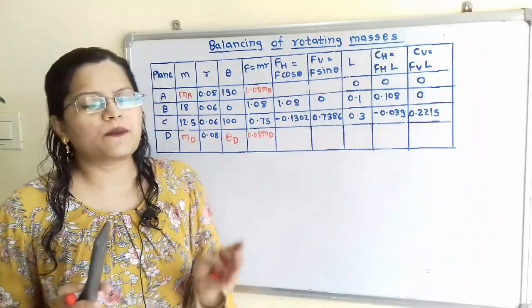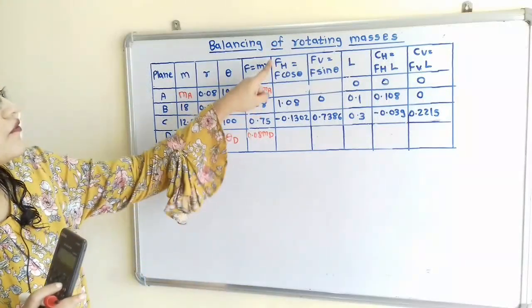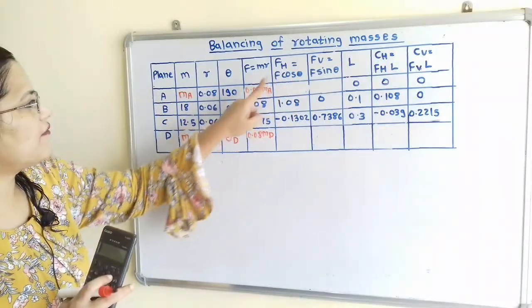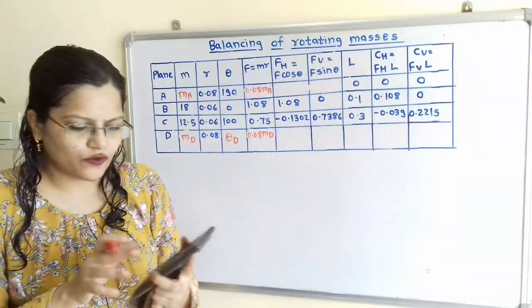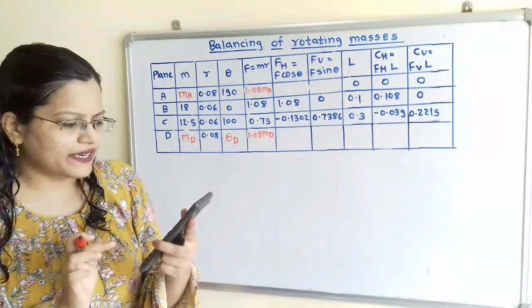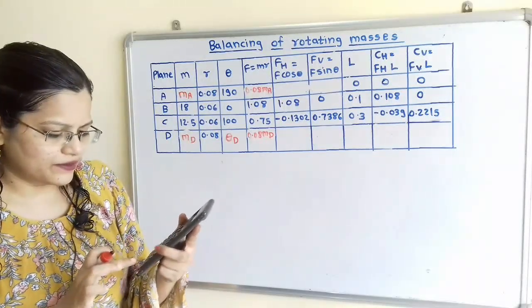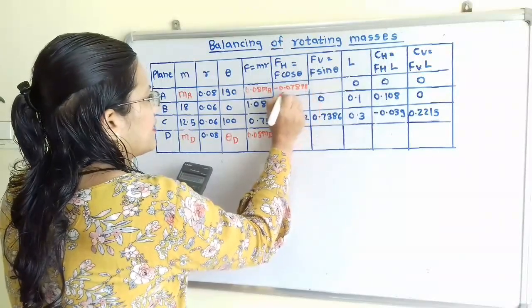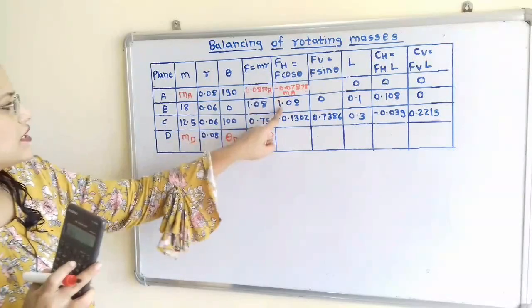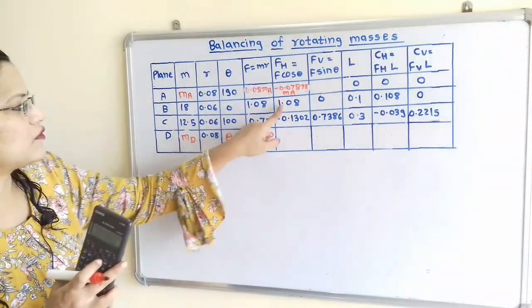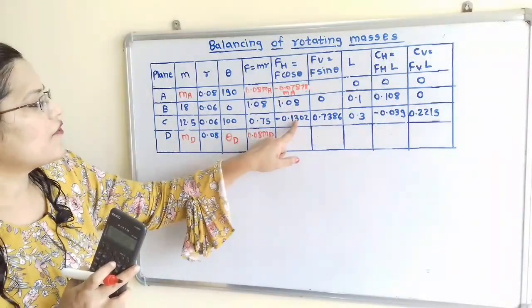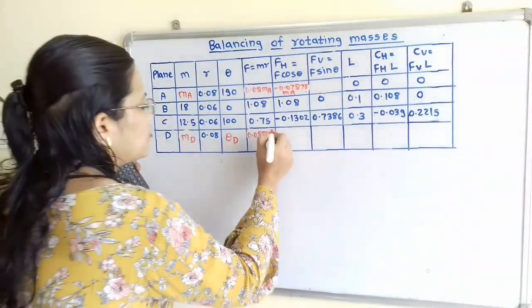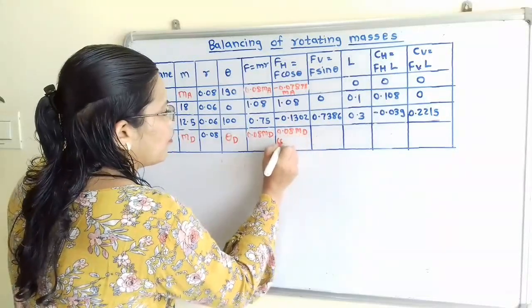We find the horizontal component F·cosθ for each plane. For A: 0.08·MA × cos(190°) = −0.9848 × 0.08 = −0.0787·MA. For B: 1.08 × cos(0°) = 1.08. For C: −0.1302. For D, since theta D is unknown, the horizontal component is 0.08·MD·cos(θD).